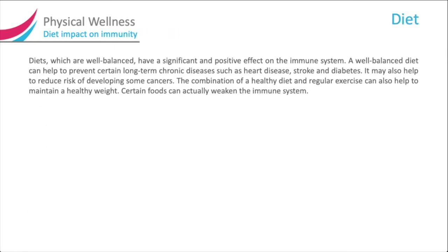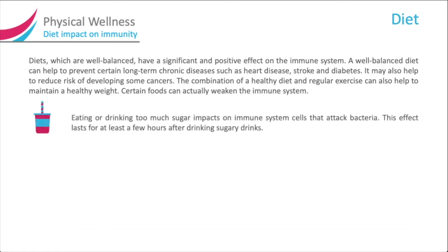Diet impact on immunity. Diets which are well balanced have a significant and positive effect on the immune system. A well-balanced diet can help to prevent certain long-term chronic diseases such as heart disease, stroke, and diabetes. It may also help to reduce the risk of developing some cancers. The combination of a healthy diet and regular exercise can also help to maintain a healthy weight. Certain foods can actually weaken the immune system. Eating or drinking too much sugar impacts the immune system cells that attack bacteria, and this effect lasts for at least a few hours after drinking sugary drinks.